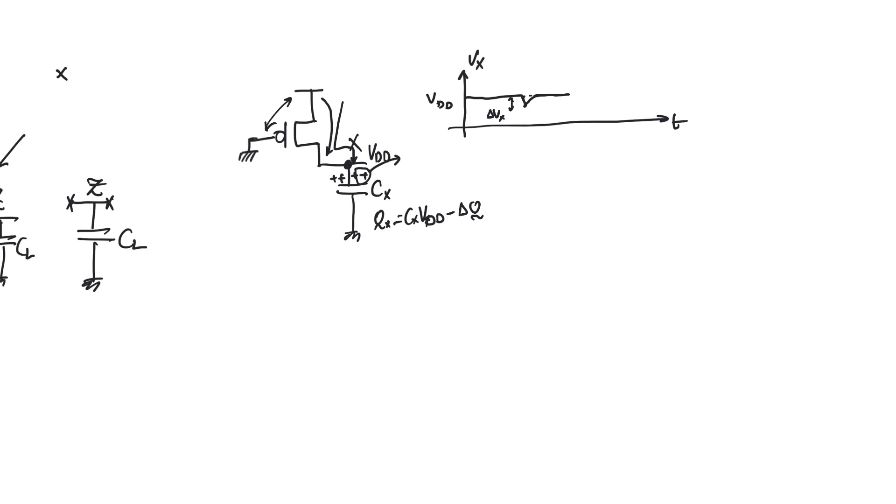But node X and nodes similar to node X are called low-impedance nodes, and the reason we call them low-impedance nodes is because they are connected to the supply or to the ground through a relatively low impedance. In this case, the relatively low impedance is the impedance of the PMOS, and so we have a relatively low impedance of RP connecting the node X to the supply voltage VDD. And the impact that this has on node X is that it ensures that node X will always restore itself back to VDD if there is any source of interference.